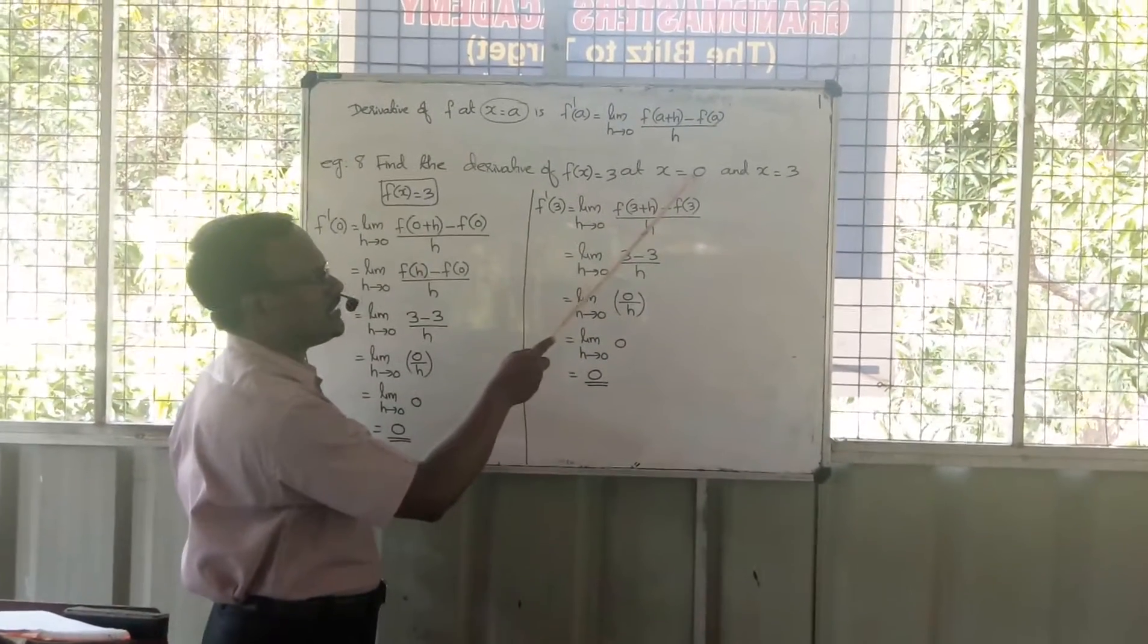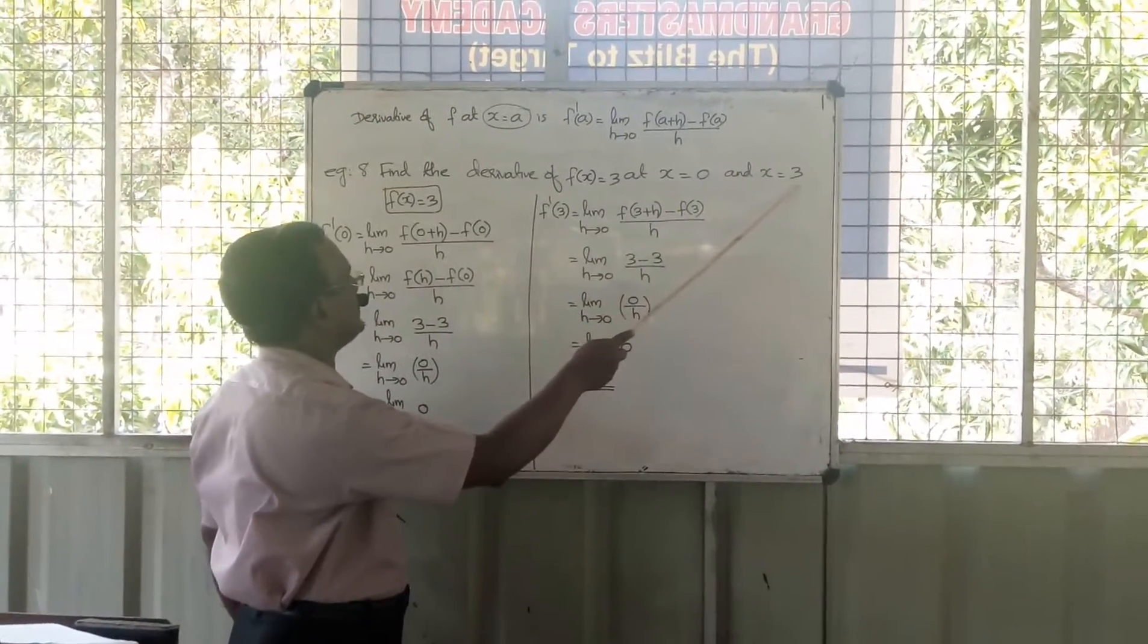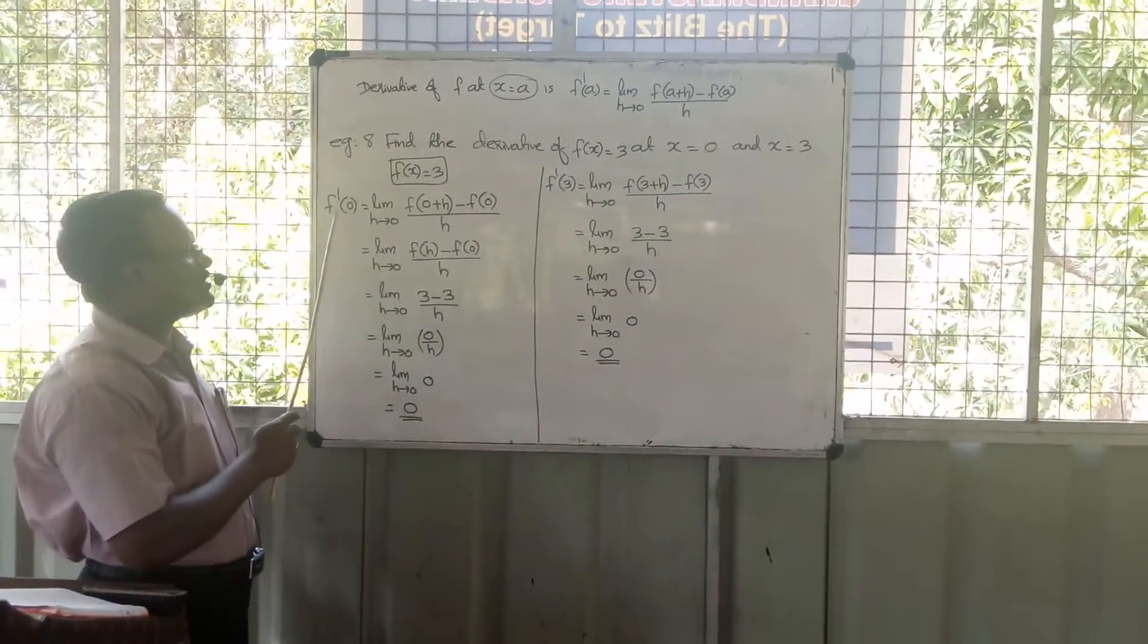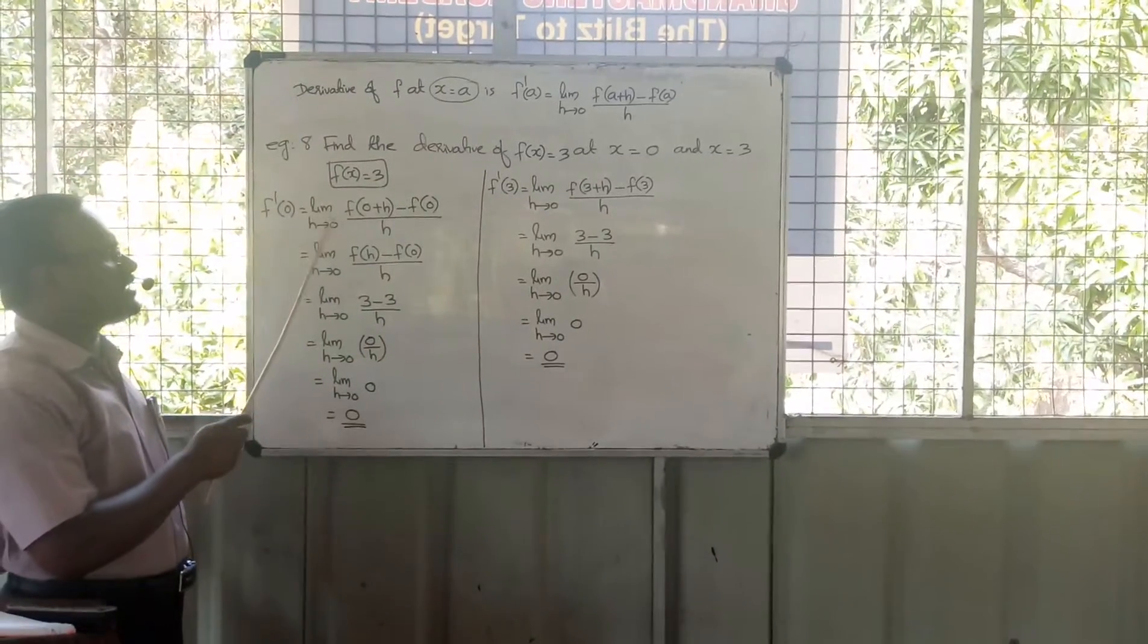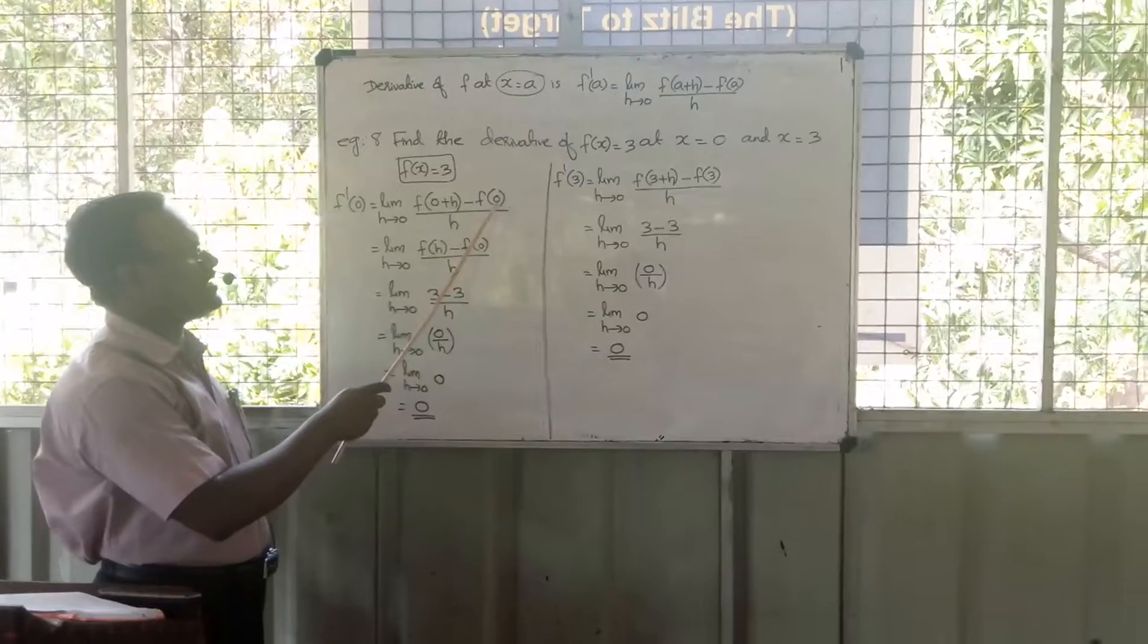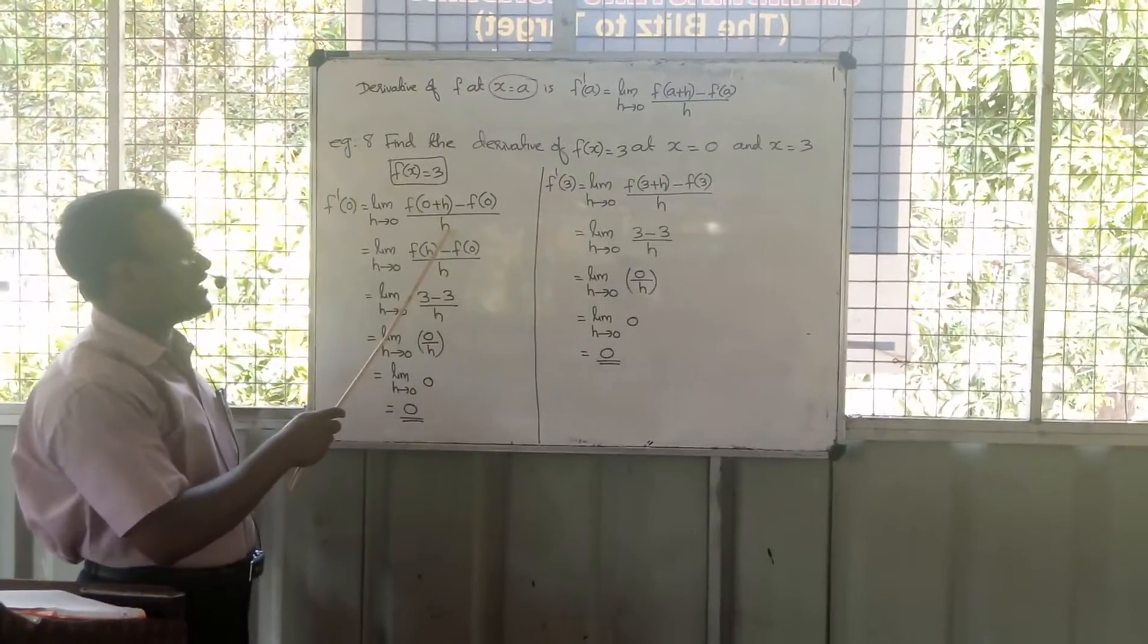At x = 0 or at x = 3, we'll find the derivative. By definition, f'(0) is limit h tends to 0, f(0 + h) minus f(0) divided by h.